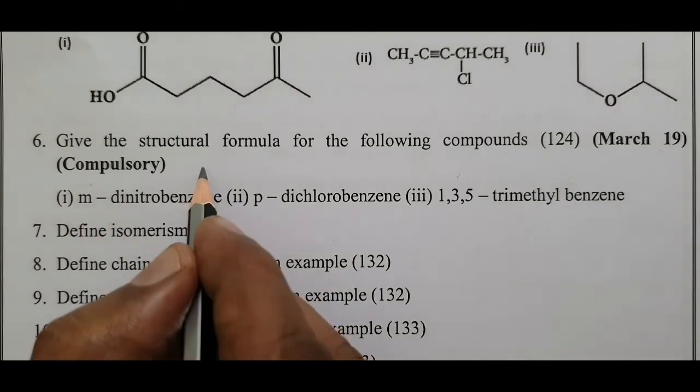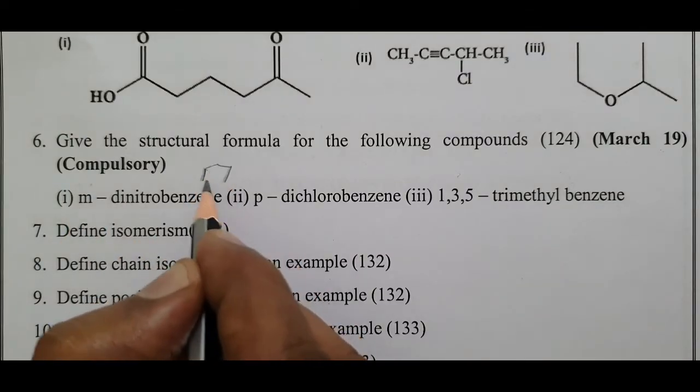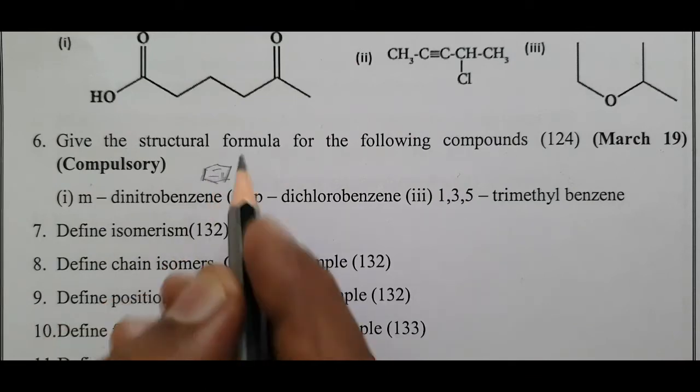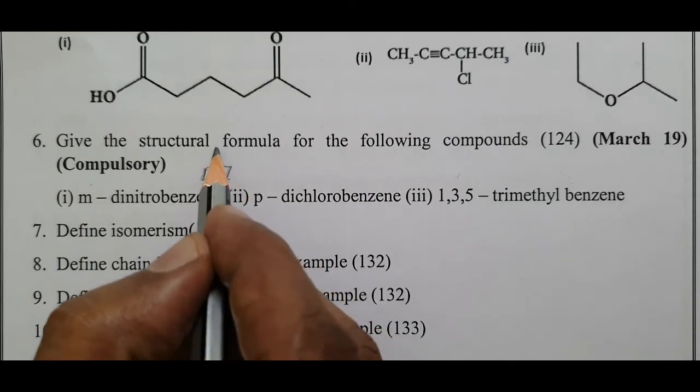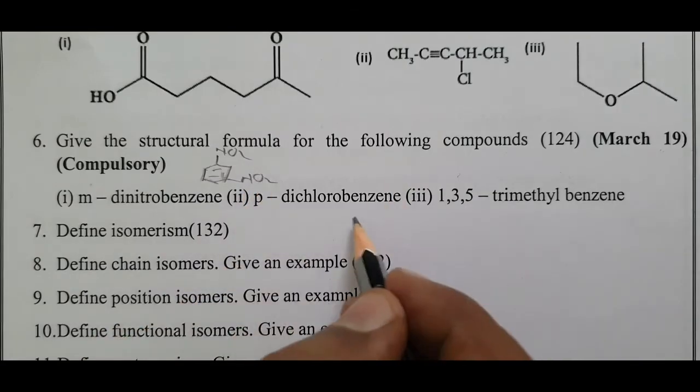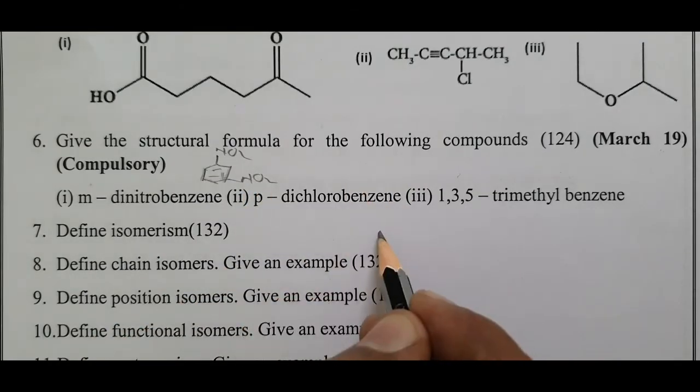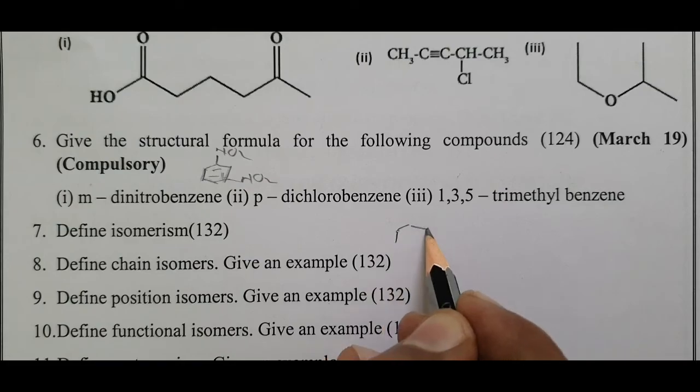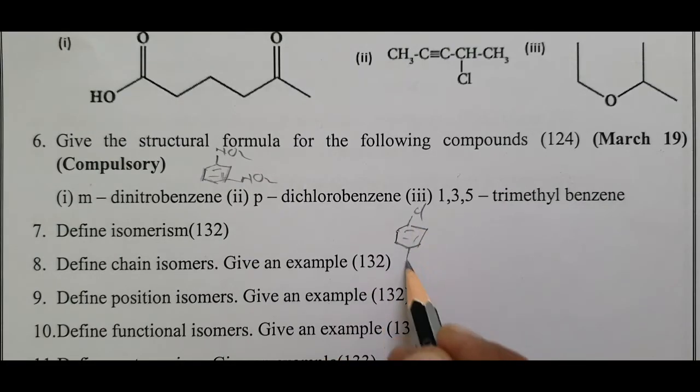Meta-dinitrobenzene: benzene with alternate carbons having two NO2 groups. Para-dichlorobenzene: benzene with opposite carbons having two chlorines. This is para.